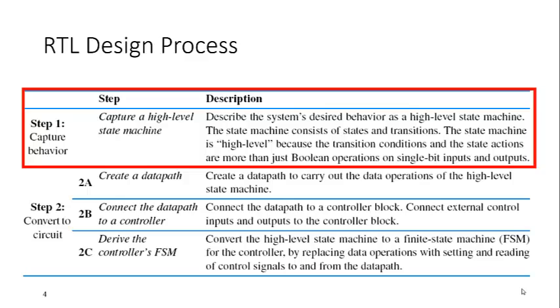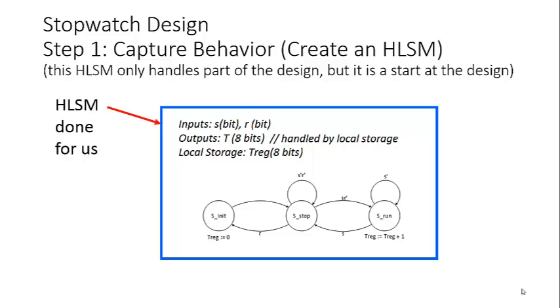Step one is to capture the behavior. A high-level state machine was given to us in our lab manual. We see that it consists of three states: S_init, S_stop, and S_run. We have two inputs, S and R, which are each one-bit wide, and we have an output that is 8-bits wide, labeled T. We know that for our RTL design process, our output should always be stored, so we have local storage T-reg, which is also 8-bits wide.